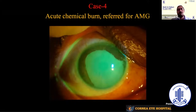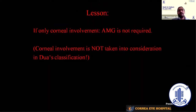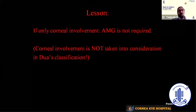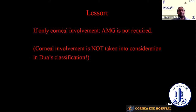Another case: a surgeon referred a patient for amniotic membrane, thinking it was an extensive chemical burn. On examination, only the cornea was involved with almost no limbal involvement. In such patients, amniotic membrane is not required. In Dua's classification, corneal involvement alone is not taken into consideration for grading.